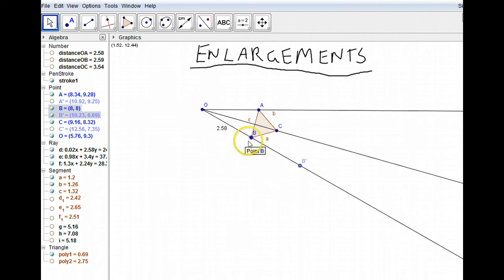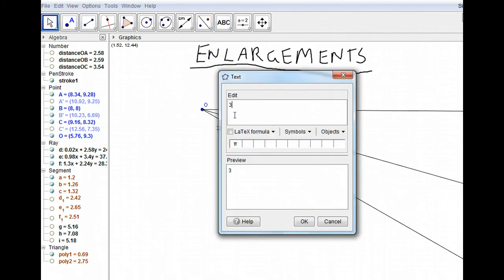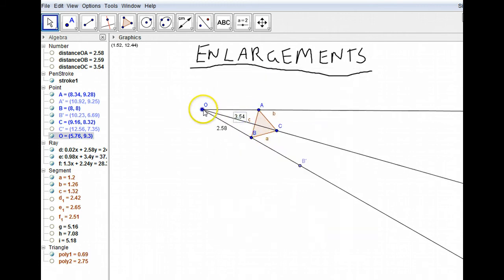So the length from there to there is 5.16. Now we're going to do the same for O to C. The length from O to C is 3.54. I might just write that down as well. So we're going to draw a line that is double that. 3.54 times 2 is 7.08, and we're going to draw a dot there.